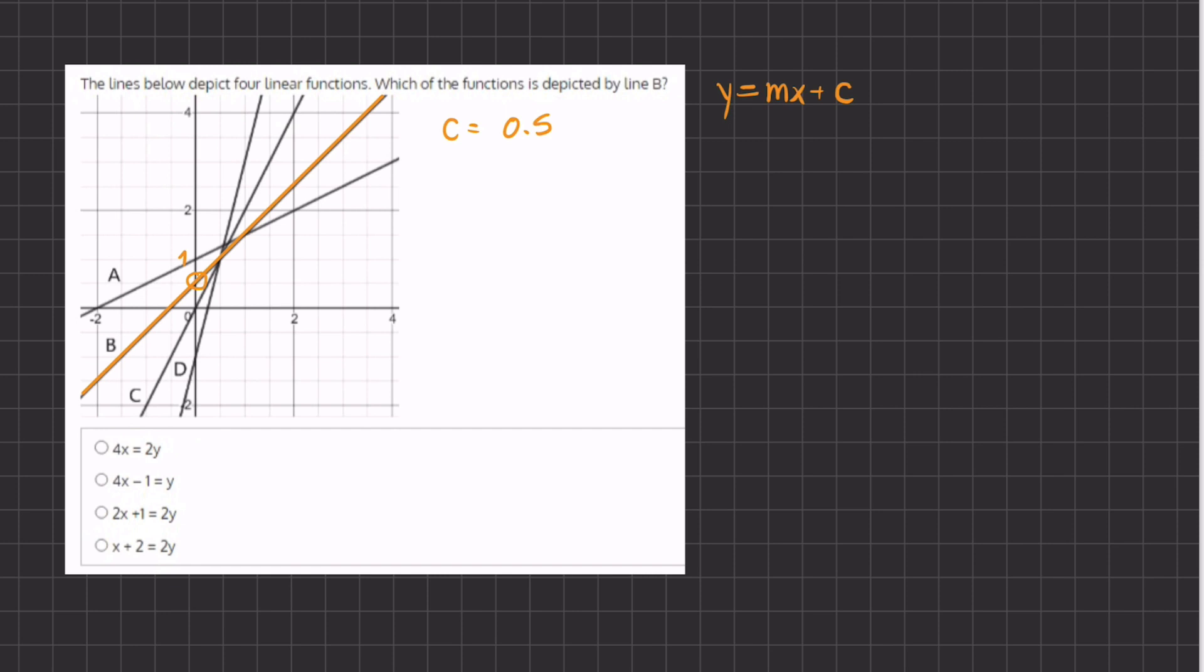So our first point that we've already picked out is 0, 0.5. And our second point can be right over here which is negative 0.5, 0.